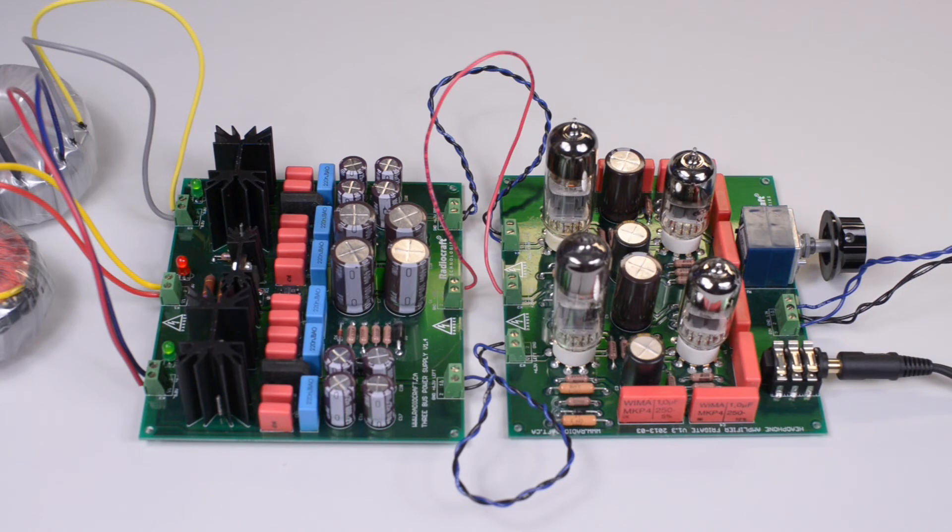The low impedance headphones were Grados and the high impedance phones were Sennheisers. In both cases, with low impedance and high impedance headphones, this headphone amplifier kit was able to deliver very strong, very punchy signal.